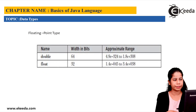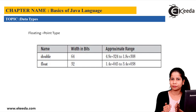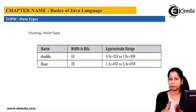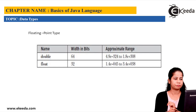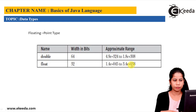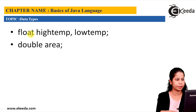Floating point data types allow storing any real number with a decimal point, as well as numbers with exponents. Functions like sine and cosine in mathematics always produce results with decimals, so we can store such results in float. The two floating point types are float, which requires 32 bits, and double, which takes 64 bits. Example declarations: float highTemperature, lowTemperature; double area.